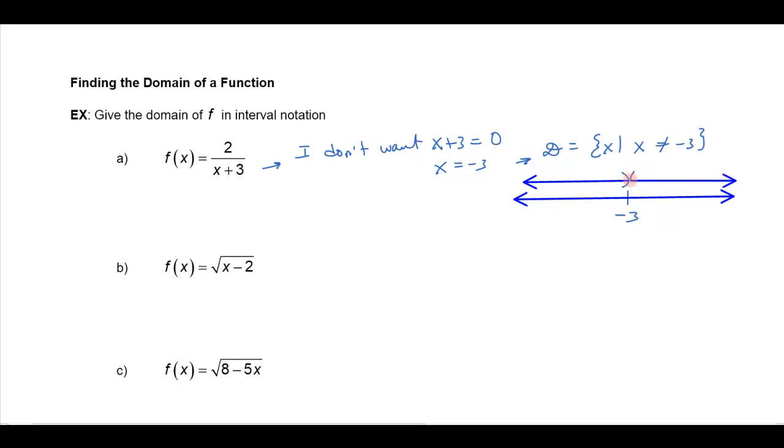So this would be the way I would graph the domain. It's basically everything except that one little point. And so in interval notation, that'd be the interval from minus infinity to minus three, union from minus three to infinity. And you can see that's actually quite a lot more clunky than just using the set builder notation, which is why we have both, so that we can use whichever one is the easiest for us to write.